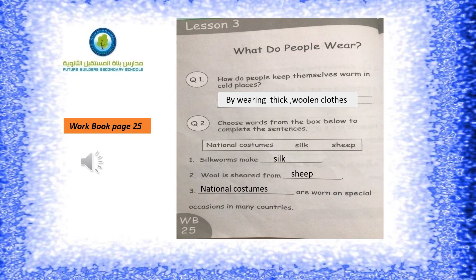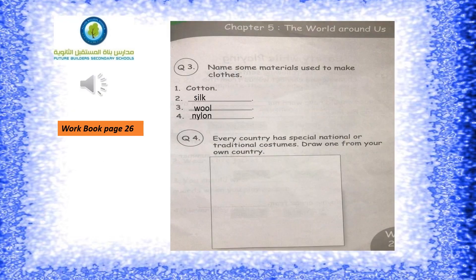After learning the lesson and reading all the paragraphs and learning new words, we're going to do some exercises together. Open your workbook to page 25. The questions are shown but do them on your own, then check your answers. Question 1: How do people keep themselves warm in cold places? Question 2: Choose words from the box to complete the sentences: silkworms make..., wool is sheared from..., are worn on special occasions in many countries. Page 26, Question 3: Name some materials used to make clothes. Question 4: Every country has a special national or traditional costume — draw one from your own country. Thank you for solving all the questions, and I hope you send me your drawings. Thank you so much.